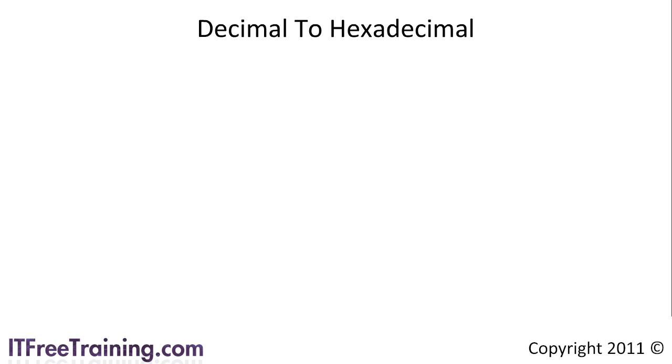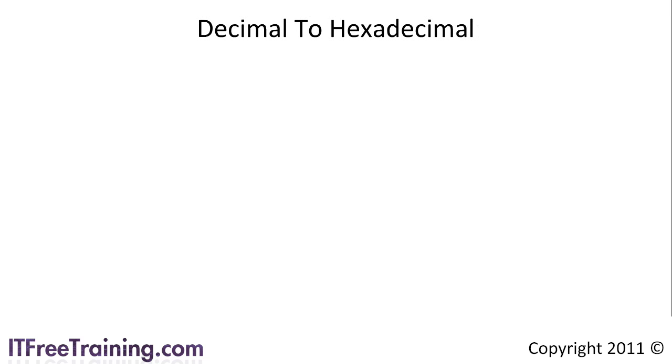With IP version 6, hexadecimal is used in the IP address, so you need to have an understanding of it in order to master IP version 6. If I were to take an IP version 4 address and convert it to hexadecimal, I would do the following.